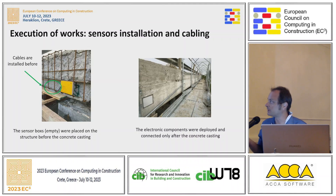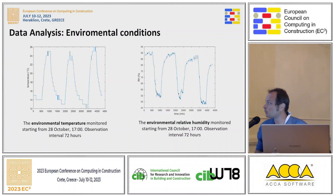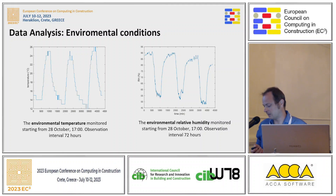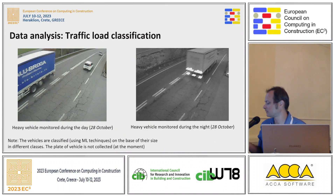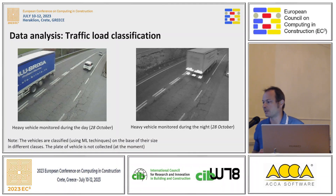Here you can see some of the phases of sensor installation. From the sensors, we collect a real-time stream of data from environmental sensors like temperature and humidity. We also detect parameters such as the deflection angle of beams, three-axial acceleration, and traffic load. Here you can also see details about the traffic load classification system installed on the bridge to classify the vehicles crossing it.